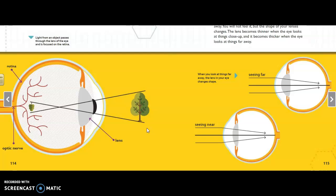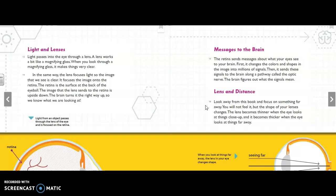It shows how the shape of the lenses change when you're looking at something near or far away. So, now I want you to think, how does this diagram add to your understanding of the ideas in paragraph 16? That's the last paragraph we read. Look away from this book and focus on something far away. You will not feel it, but the shape of your lenses changes. The lens becomes thinner when the eye looks at things close up and it becomes thicker when the eye looks at things far away.